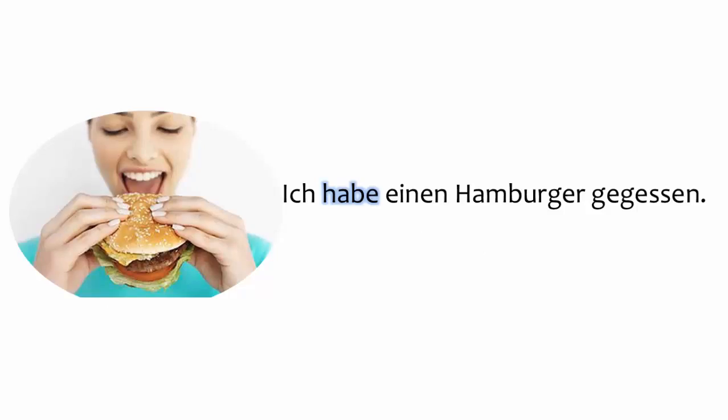The third common error to avoid is overthinking the use of wurde. Students sometimes reason that essen represents a change of state for the hamburger, and decide that the helping verb should therefore be wurde. This reasoning, although understandable, is incorrect. Instead, think about whether essen represents a change of state for the subject — the woman eating the hamburger. Since essen doesn't represent a change of state for her, the use of wurde here would be incorrect. Instead, haben is the right helping verb.